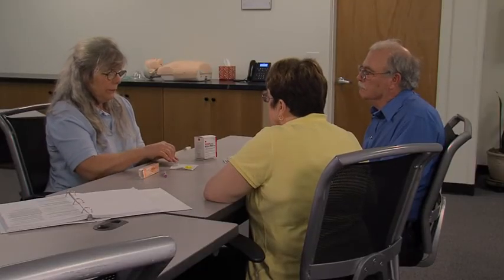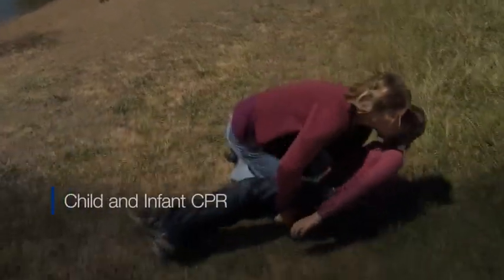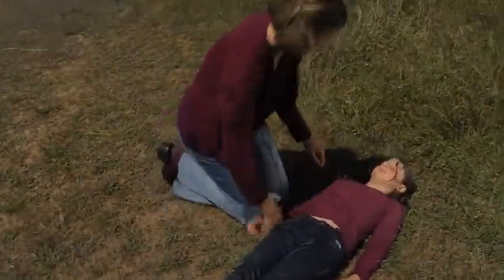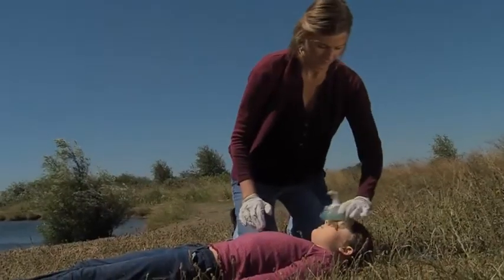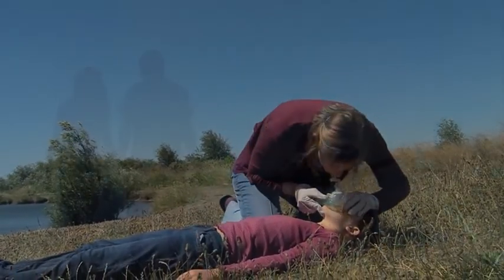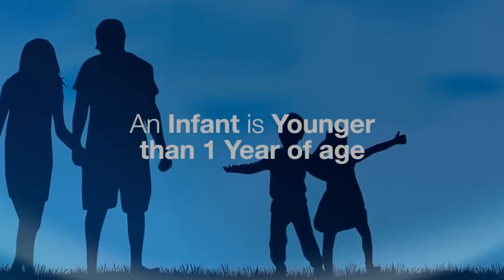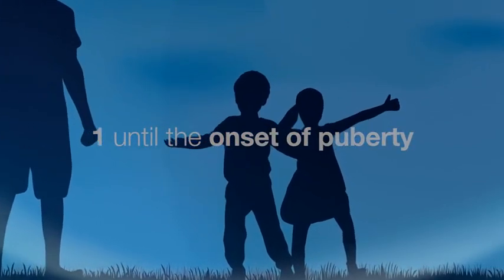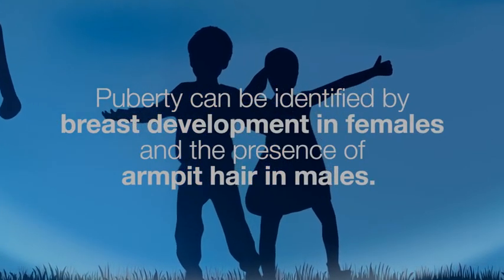Laws regarding first aid administration of naloxone vary by city and state. As with Good Samaritan laws, know the laws in your area. Children are more likely to experience a secondary cardiac arrest instead of a primary one. When describing age groups in relation to CPR, an infant is younger than one year of age, and a child is one year of age until the onset of puberty. Puberty can be identified by breast development in females and the presence of armpit hair in males.